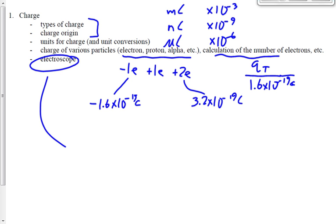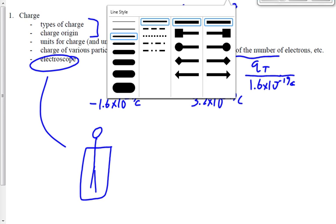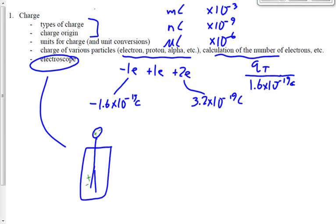An electroscope, if you remember from the day in class we did that practice problem, has this metal ball on the top. It's got this metal rod that goes down from that metal ball, and these two thin foil leaves that hang off the end of this metal rod. It starts off as neutral, so maybe we have an equal number of positives and negatives. Even distribution of protons and electrons throughout the parts of this electroscope. Let's see what happens when we bring a negatively charged object nearby the ball. Tell me what's going to happen to the positives in this electroscope.